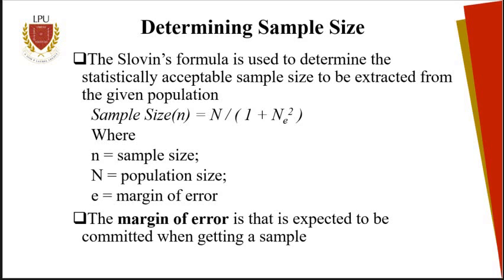Now, after determining the sampling technique, at the end of the day, you need to determine the size of the sample you're going to take out of your population. For example, if you have around 2,000 people to be investigated, how many of those 2,000 are you going to include in your research? Statistically, we have a formula to determine how big our sample size is going to be.